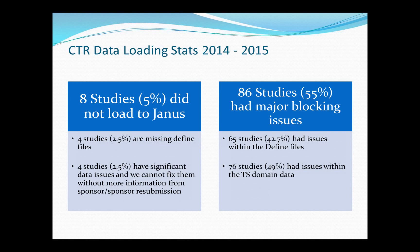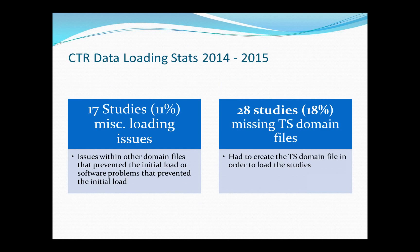We also found that 86 studies — 55% — had major blocking issues. 65 of those studies, or 42.7%, had issues with the define file that prevented loading. 76 studies, or 49%, had issues with the trial summary domain data, which is a requirement for loading into the CTR — every study must include trial summary information. 20 studies, or 18%, were completely missing trial summary domain files.